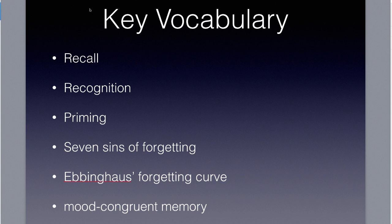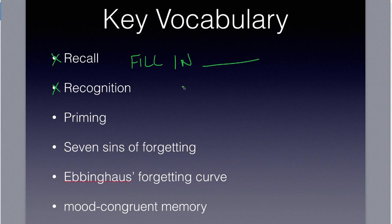We'll start off with recall and recognition — we've talked about both of these in class. Recall is your ability to identify information out of the blue, or just to retrieve information that's been previously learned. This is like a fill-in-the-blank. When you have nothing to help you out, you've just got to figure it out.